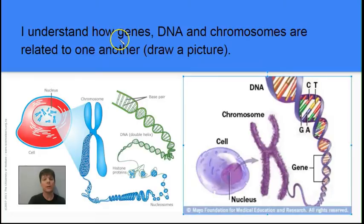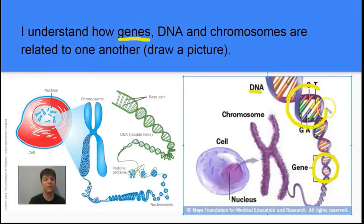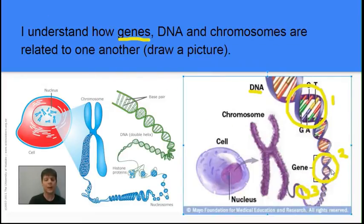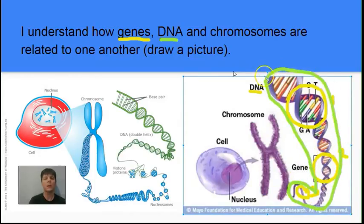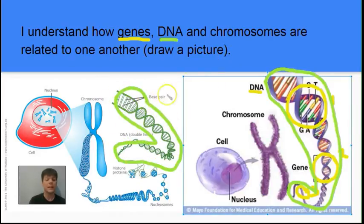Our next learning target is to understand the relationship of genes, DNA, and chromosomes. A gene is just a small region of a DNA molecule, and a gene is going to be transcribed to produce RNA. On this DNA molecule in purple, I've circled one gene here, a second gene here, and a third gene here. The DNA molecule is the double-stranded double helix molecule shown in purple, and we see the same type of image in green — again, that's a DNA molecule.